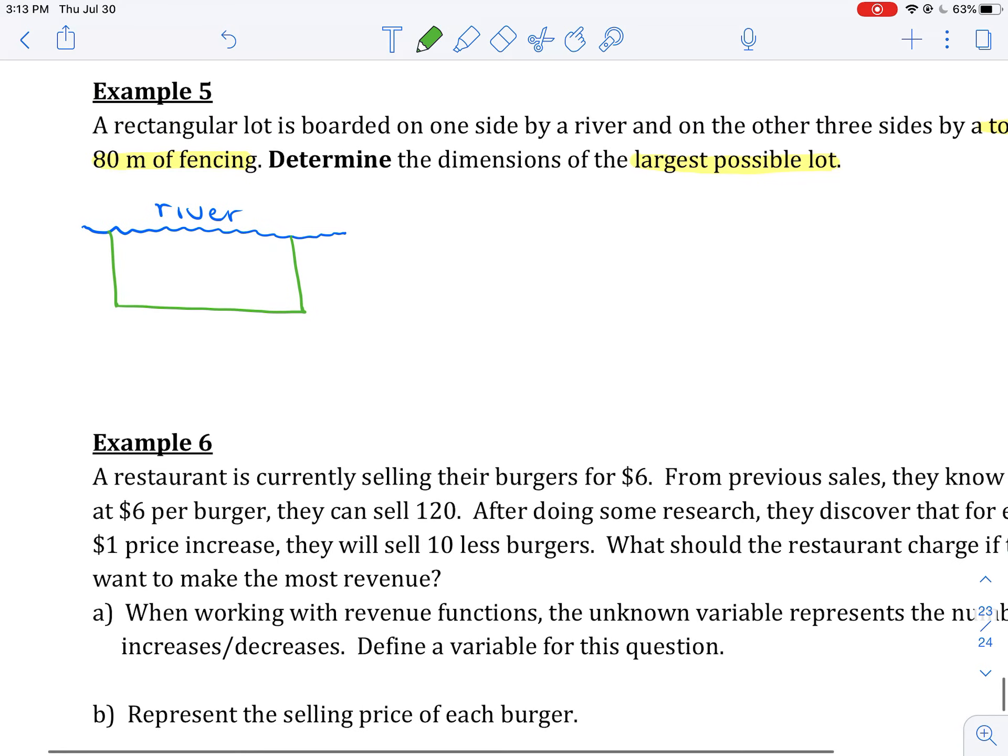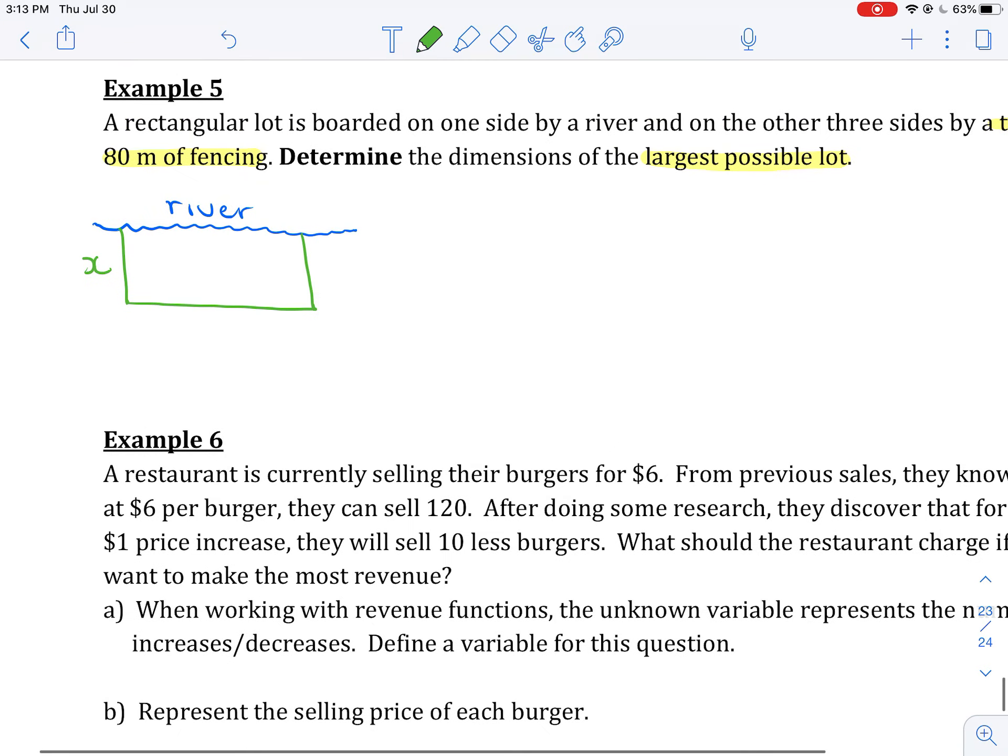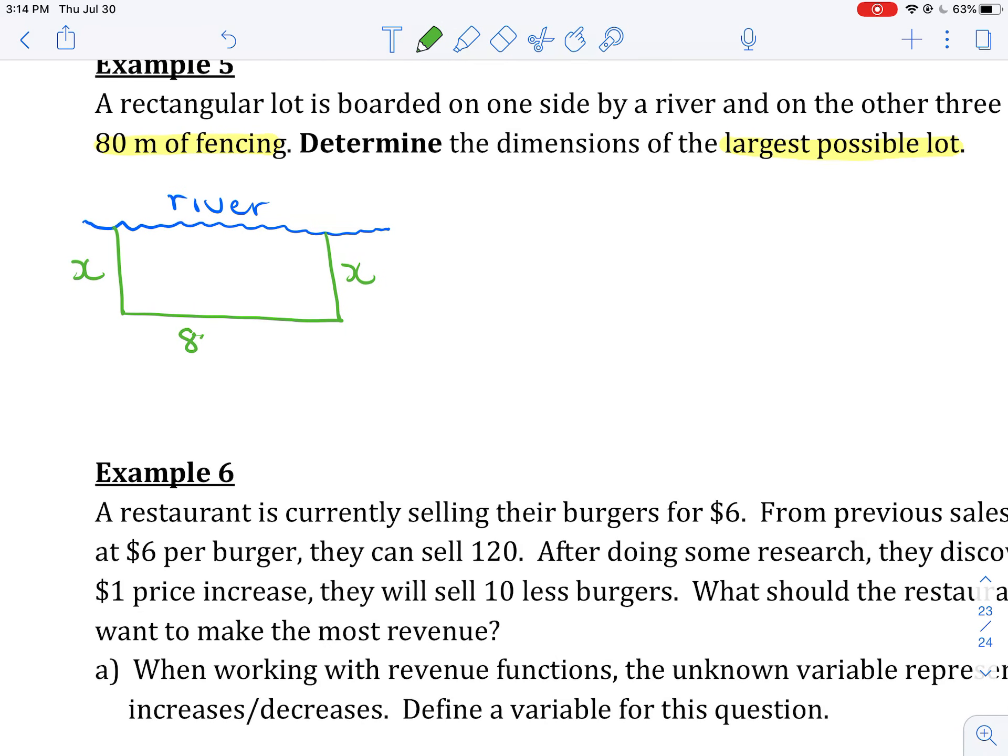I'm going to set this one up a little differently than I did example 4. I know that if I let x be this distance here, then the opposite side has to be exactly the same. So I've now used up 2x meters of fencing. I've used up x for one side, x for the other. I've used up a total of 2x. So if I started with 80 and I use up 2x, how much is left for the connecting distance? Well, this has to be 80 minus 2x.